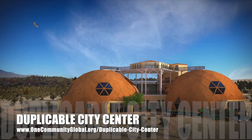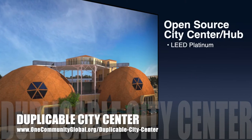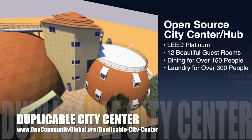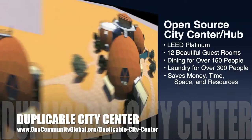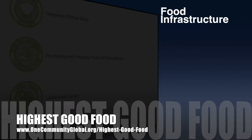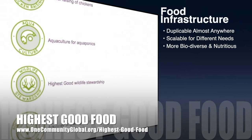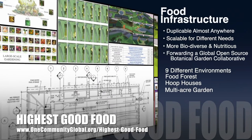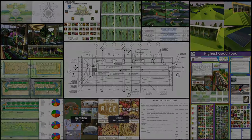One Community is also creating an open-source duplicable city center. It is designed to be LEED Platinum certified, provide 12 guest rooms, dining for over 150 people, and laundry and recreation space for over 300 people, all while saving money, time, space, and resources. One Community's approach to highest good food is duplicable almost anywhere, scalable for different needs, more biodiverse and nutritious, part of forwarding a global open-source botanical garden collaborative, and includes nine different free, shared, and duplicable growing environments.